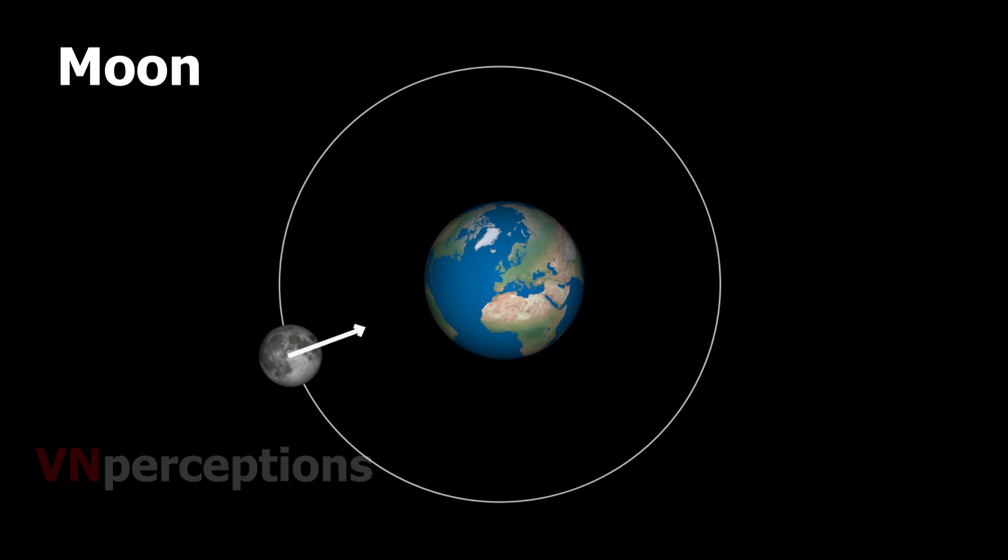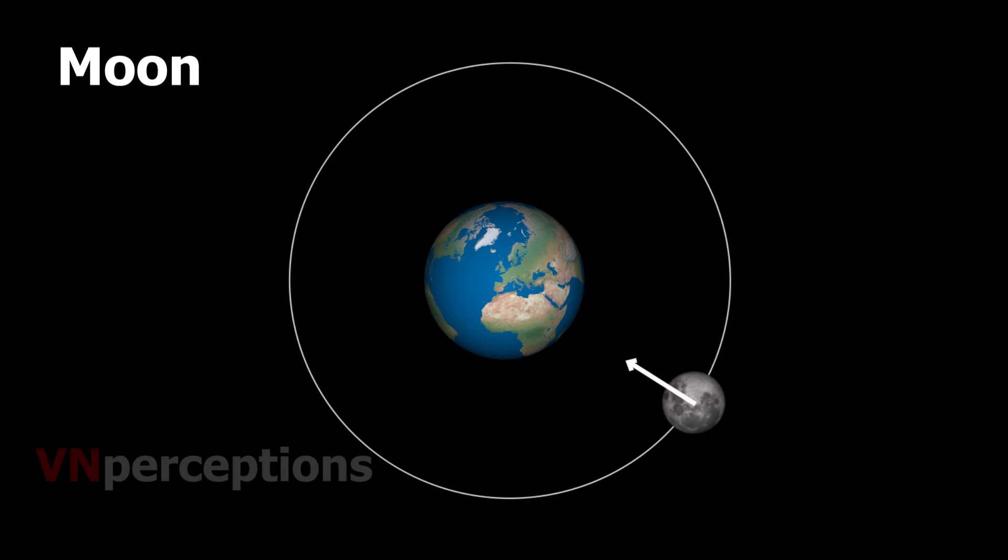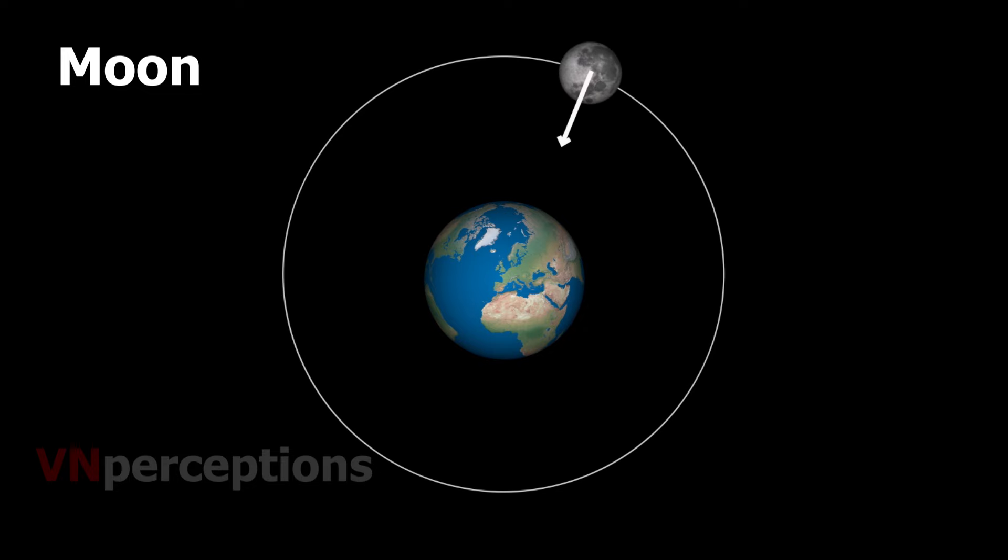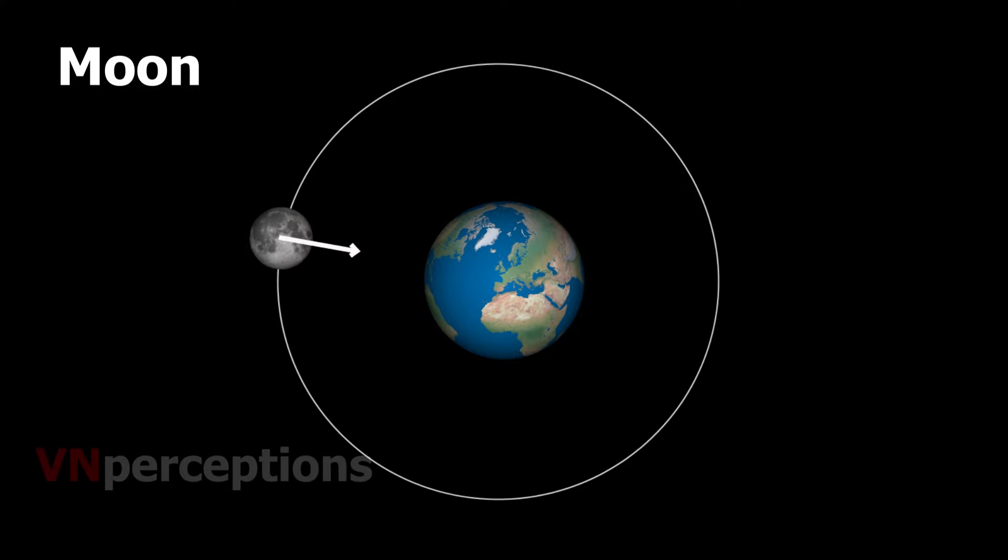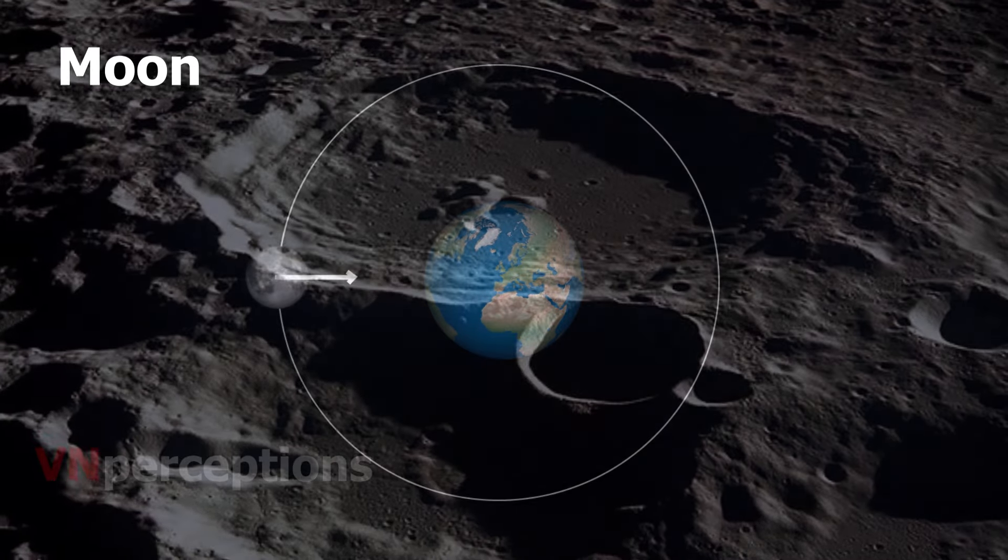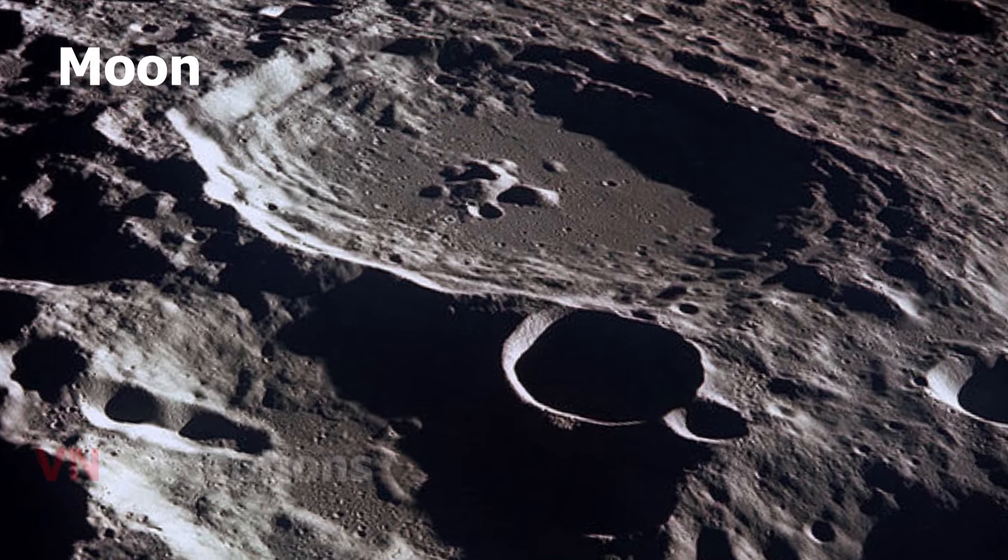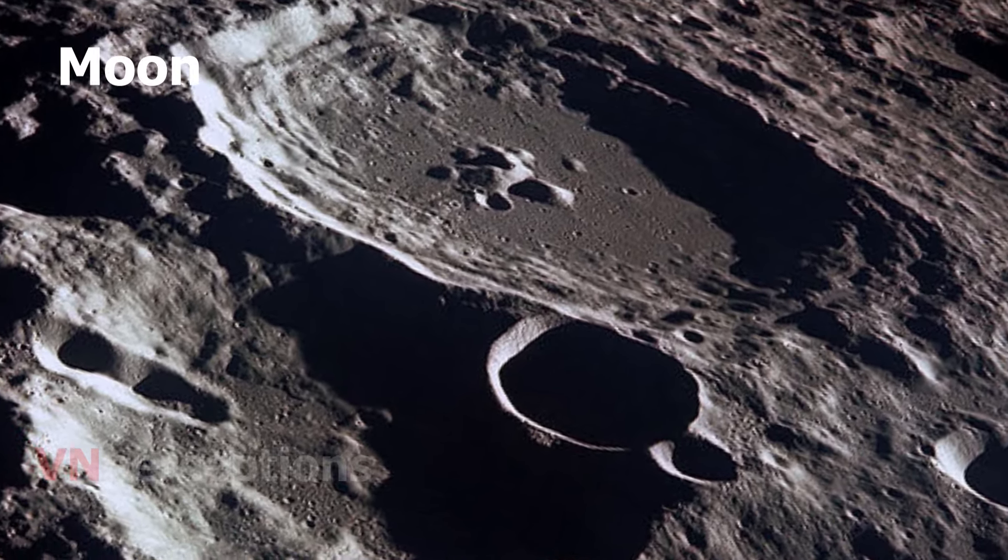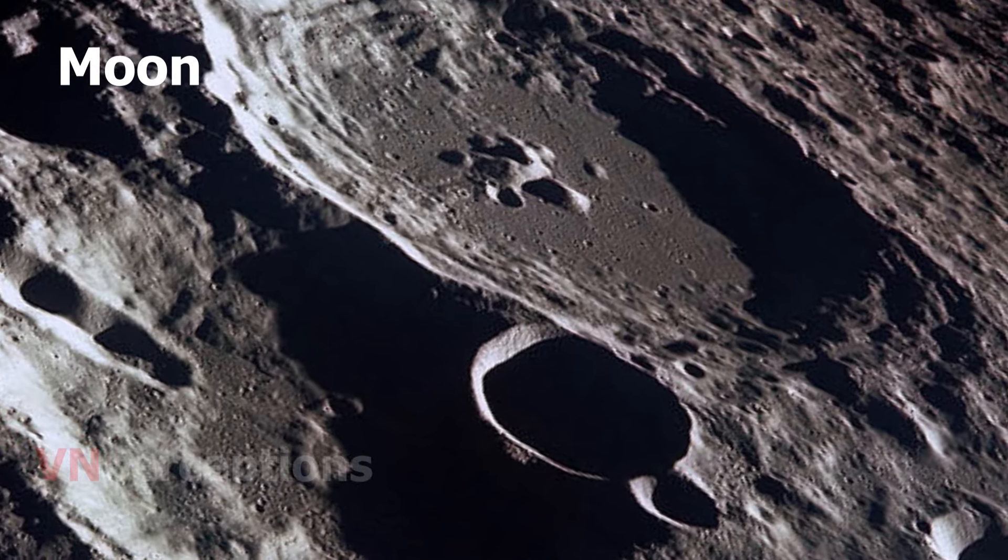The time taken by the moon to complete one rotation and one revolution is the same. As a result, only one side of the moon is visible to us on the Earth. It has mountains, plains and depressions on its surface. These cast shadows on the moon's surface. The moon does not have conditions favorable for life.